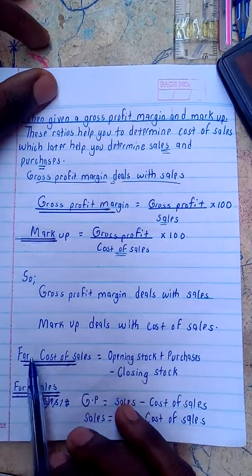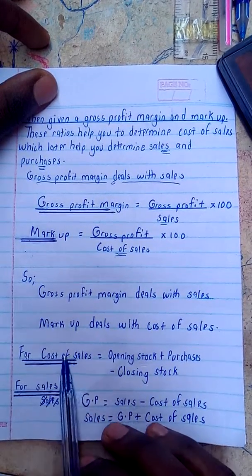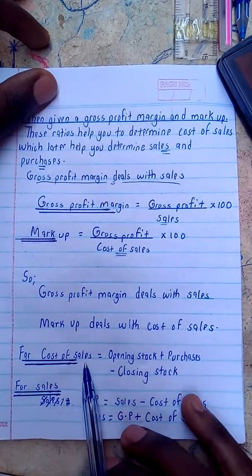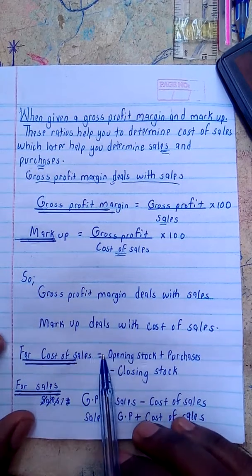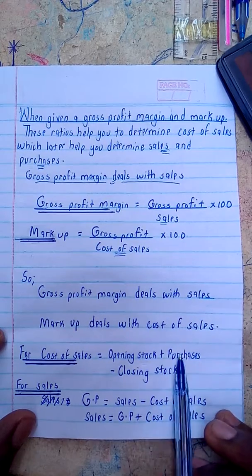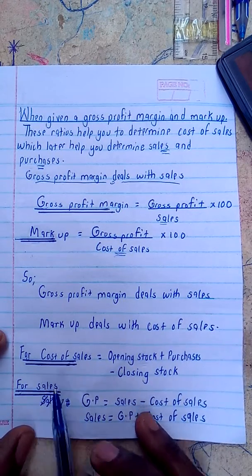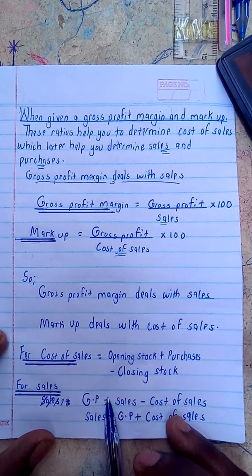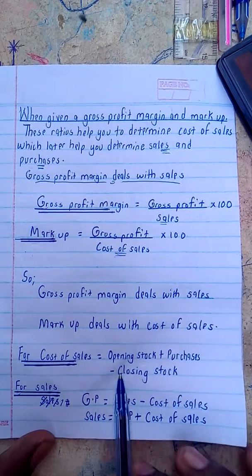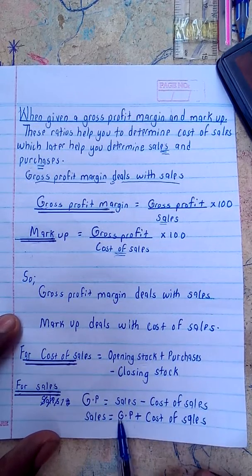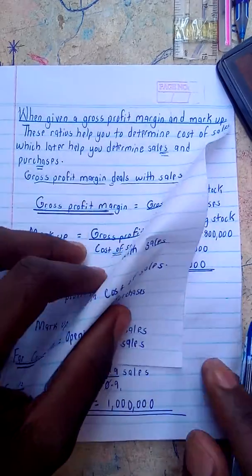I'm requiring you to follow what I'm pointing at so that you follow up very well. For cost of sales, from the formula: cost of sales equals opening stock plus purchases minus closing stock. And to determine sales, from the gross profit formula — gross profit equals sales minus cost of sales — you rearrange to get: sales equals gross profit plus cost of sales.